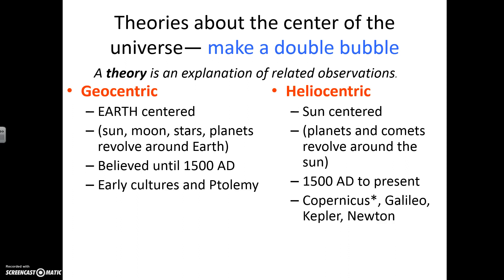Heliocentric, this is what we know to be true now. This is sun-centered. So helio, think of sun. Geo, think of Earth. You know, like geology. This is the planets and the comets revolve around the sun, and that includes us that revolve around the sun, which we know to be true. The sun stays still. And we have been believing this since 1500 AD to present.